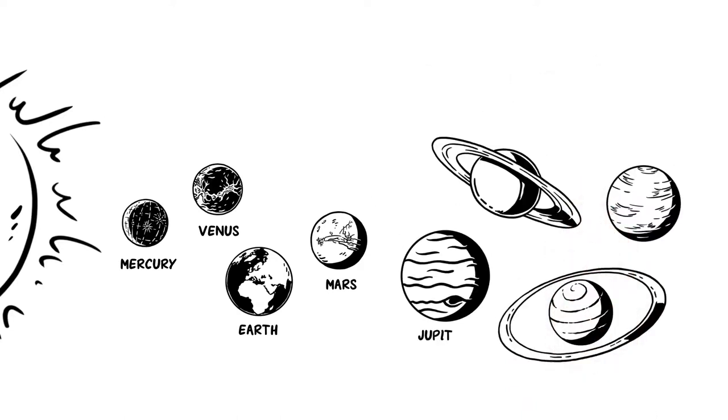And the outer planets are Jupiter, Saturn, Uranus, and Neptune.